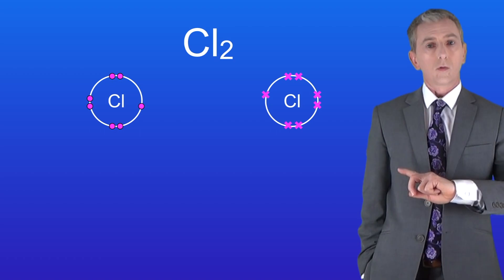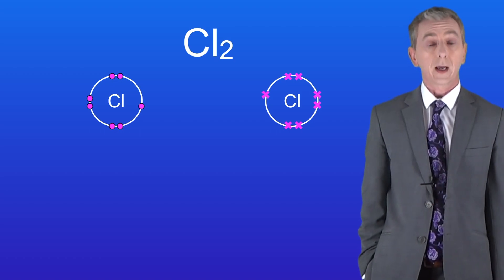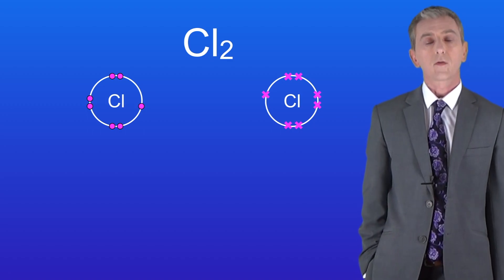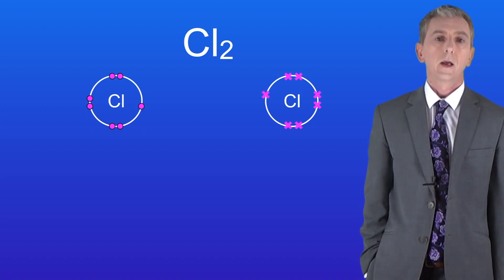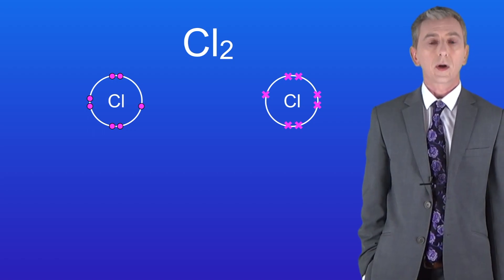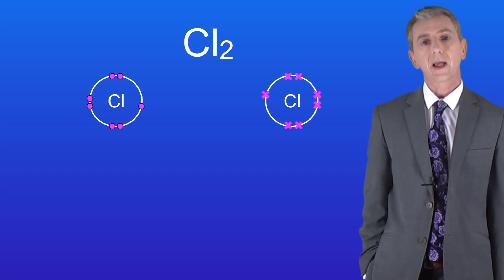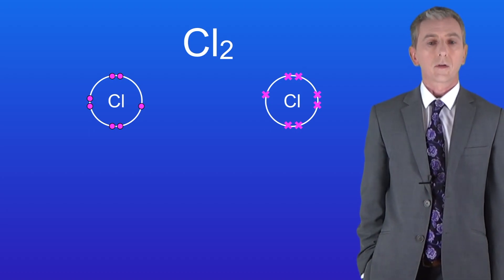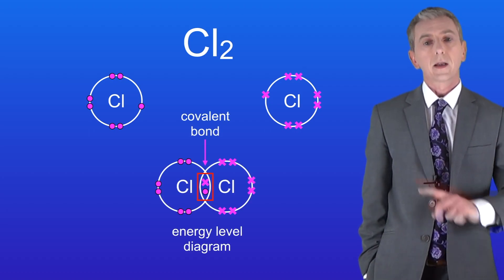This shows two atoms of chlorine and you'll notice that I've only drawn the outer energy levels. That's because only the outer energy levels are involved in covalent bonding. You can see that each atom of chlorine needs one more electron to achieve a full outer energy level. They can do this by overlapping the outer energy levels forming a single covalent bond like this.